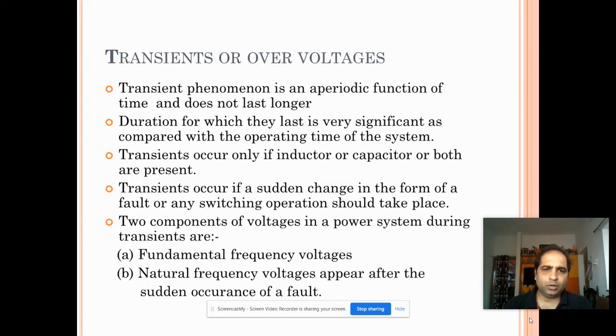Transients or over voltages. Before we go through the chapter we will understand what is a transient or what is an over voltage. Transient phenomenon is an aperiodic phenomenon which does not occur periodically, occurs randomly, and does not last for a longer duration. Duration for which they last and the operating time of the system is very significant in the study of transients or over voltages.